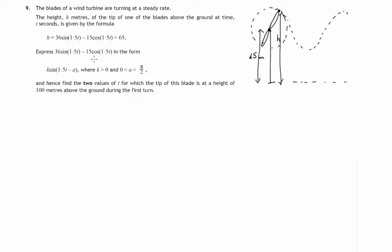The first part asks us to rewrite 36 sine 1.5t minus 15 cos 1.5t in a different form. It's in this sine form where it's some constant times sine of an angle which will give us this sine curve shape.